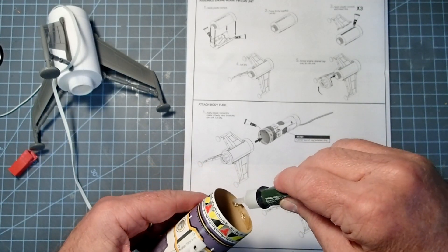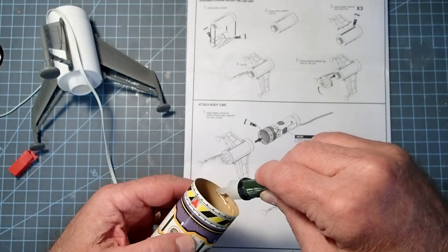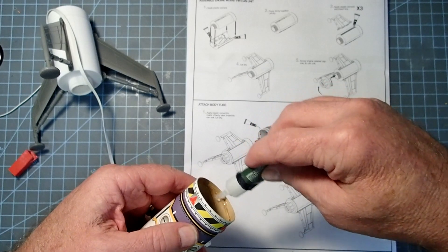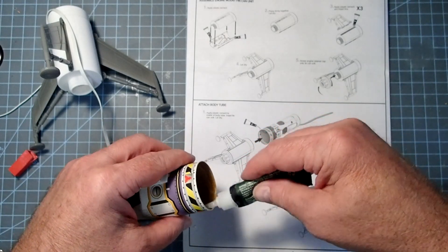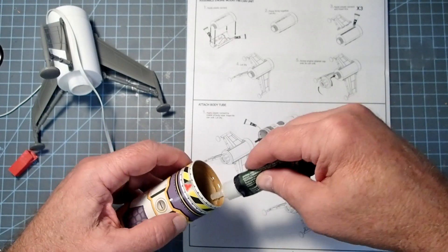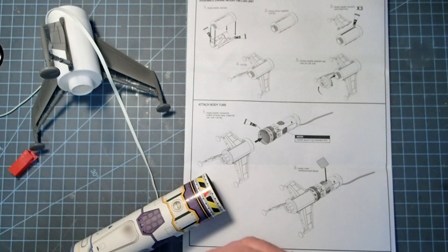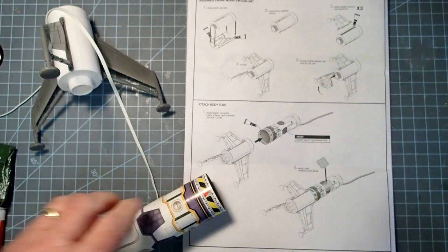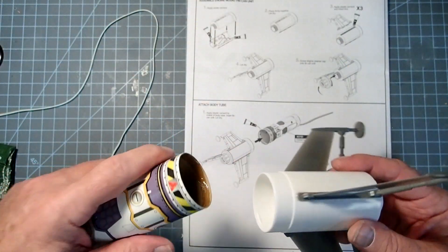So we're just going to apply a bead of glue right inside here. Just right inside the tube. And I actually used the applicator here to kind of smear that around, get a nice even layer. Keep it on the inside of the tube.